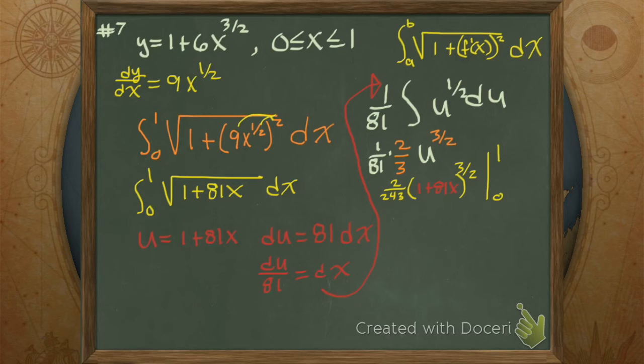81 times 3 is 243, and I put in my u, 1 plus 81x to the 3 halves.